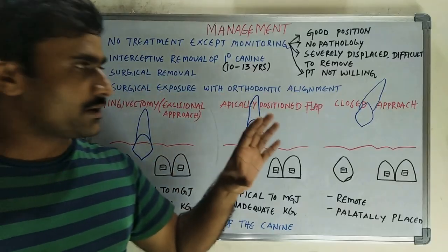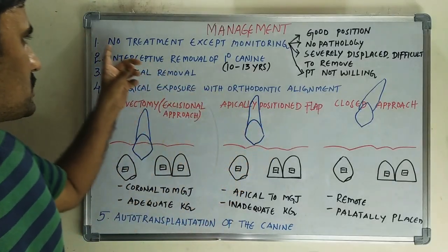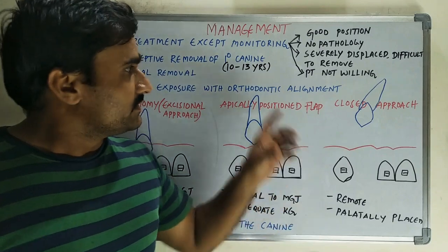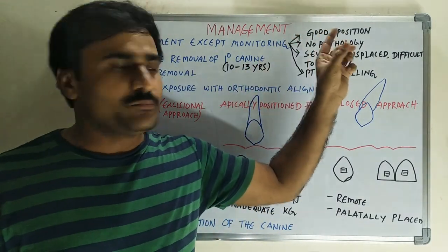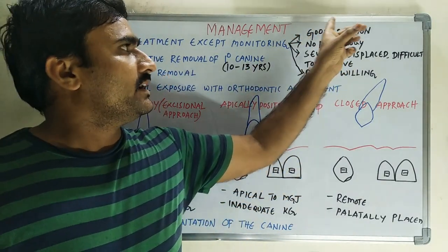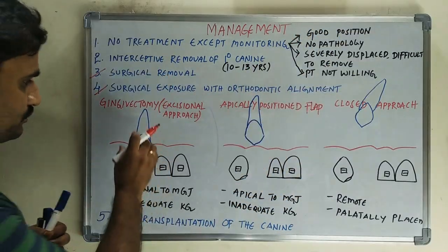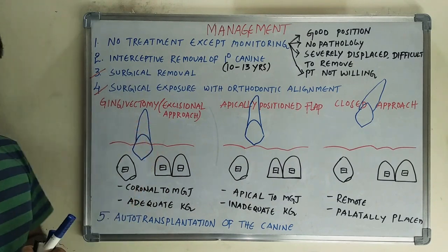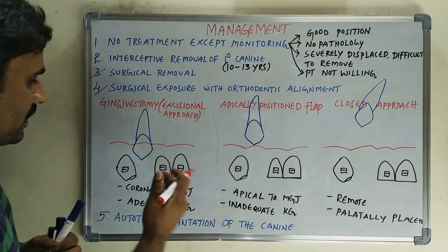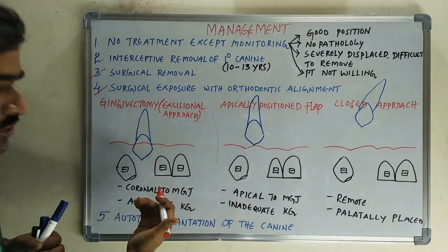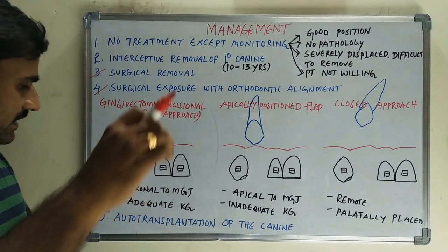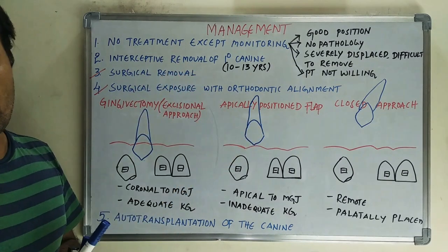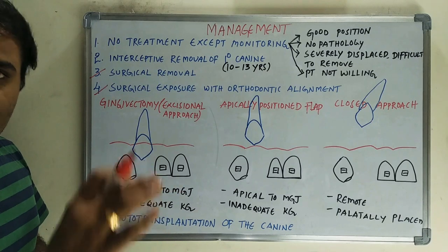There are five treatment options. The first is no treatment except monitoring. This is indicated when the canine crown is in a favorable position — specifically, when the impacted canine crown is coronal to the mucogingival junction and there is adequate presence of keratinized, that is attached, gingiva.